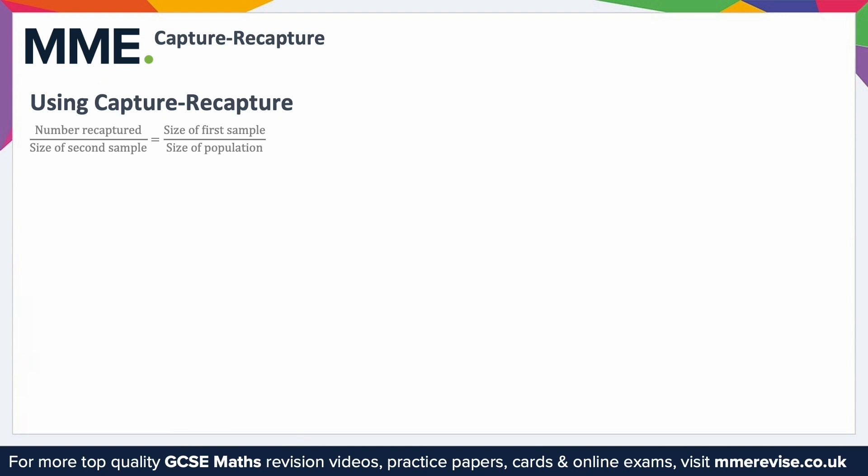Whereas if you tried to count all of the ants within somebody's garden, it would be very difficult to make sure that you've got every single one. Or expanding this out, for example, if you wanted to count all of the lions in a particular region of Africa, it would be very difficult to make sure you've got every single one. So this is a method of estimating it based off just a few of them.